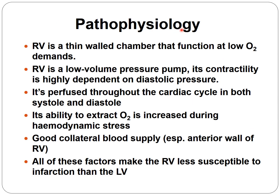Pathophysiology of the right ventricle: the right ventricle is a thin-walled chamber functioning at low oxygen demand. It is a low-volume pressure pump whose contractility is highly dependent on diastolic pressure. It is perfused throughout the cardiac cycle — both systole and diastole — and its ability to extract oxygen increases during hemodynamic stress. Good collateral blood supply, especially to the anterior wall, makes the right ventricle less susceptible to infarction than the left ventricle.